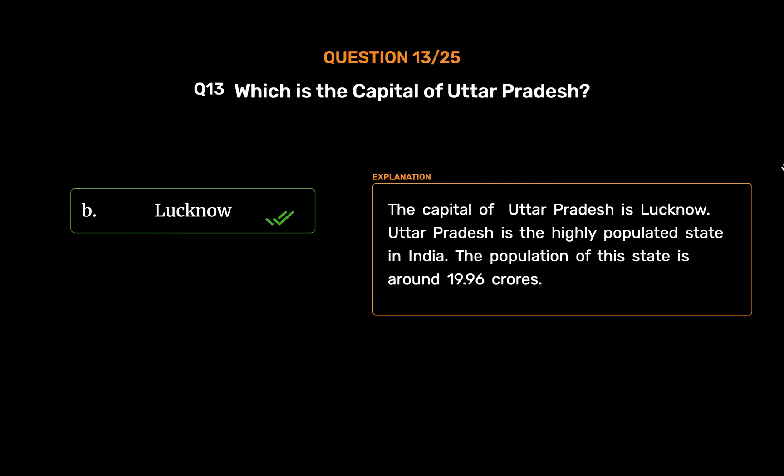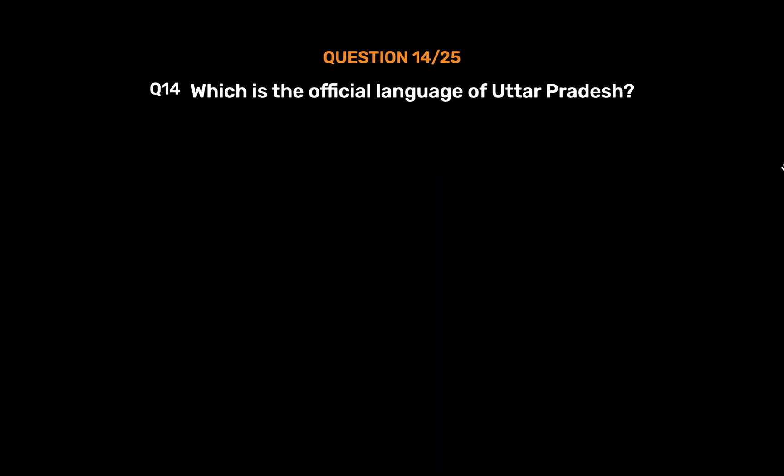Uttar Pradesh is the most highly populated state in India. The population of this state is around 19.96 crores.